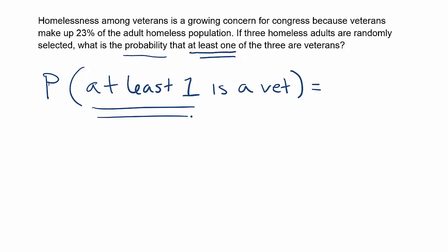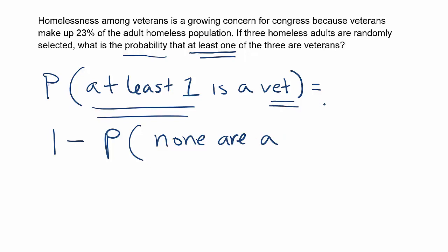Whenever you can use this approach, the probability of at least one will probably save you time. That corresponds to a formula on our formula card: one minus the probability that none are a veteran. So if it says probability at least one is a cat, it would be one minus the probability that none are cats. In this case, we're going to say none of them are vets. What we're using here is essentially a rule of complements, because it makes the problem a lot simpler to solve.